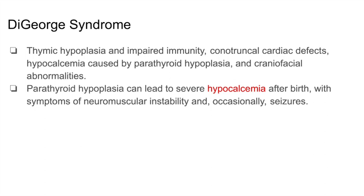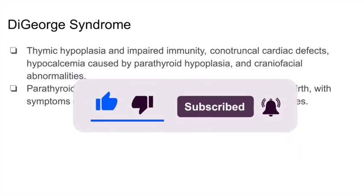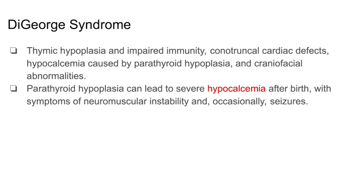Let's take a closer look at DiGeorge syndrome. This condition is associated with thymic hypoplasia and impaired immunity, conotruncal cardiac defects, hypocalcemia caused by parathyroid hypoplasia, and craniofacial abnormalities. Parathyroid hypoplasia leads to severe hypocalcemia after birth, and these patients can present with seizures and neuromuscular instability. Remember the CATCH-22 mnemonic: C for cardiac abnormalities, A for abnormal facies, T for thymic aplasia, C for cleft palate, H for hypocalcemia, and 22 for the deletion of chromosome 22q11.2.